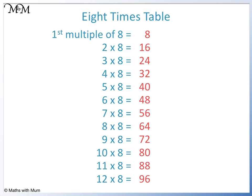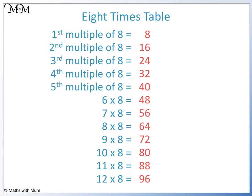16 is the second number in the 8 times table. 16 is the second multiple of 8. 3 times 8 equals 24. 24 is the third multiple of 8. 32 is the fourth multiple. 40 is the fifth multiple, and so on.